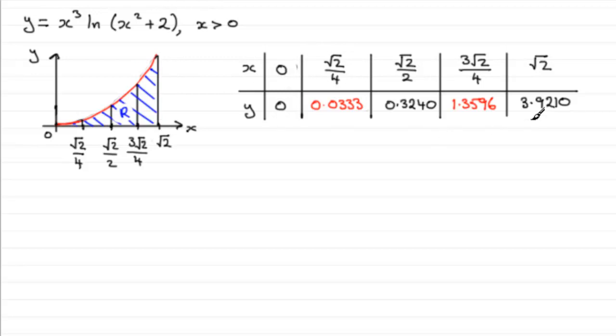And we've got this table of values for y here and we're asked to fill in the two values of y for x equals root 2 over 4 and 3 root 2 over 4, giving our answers to four decimal places.